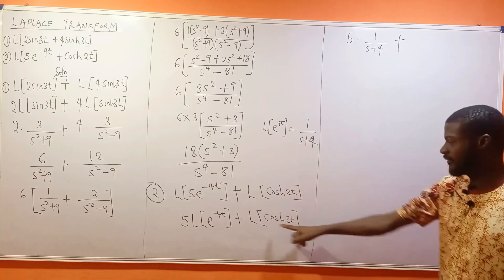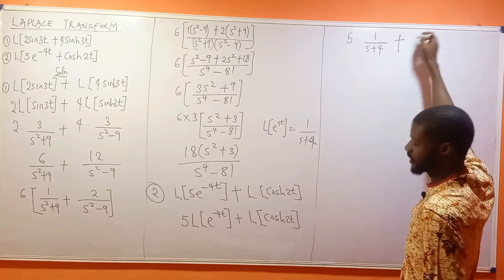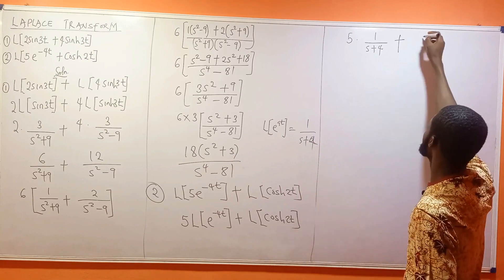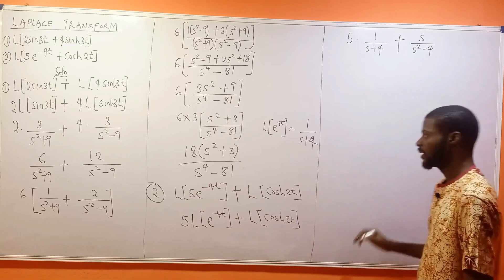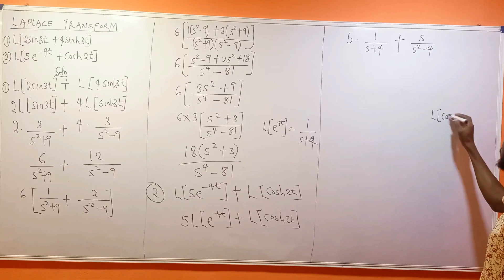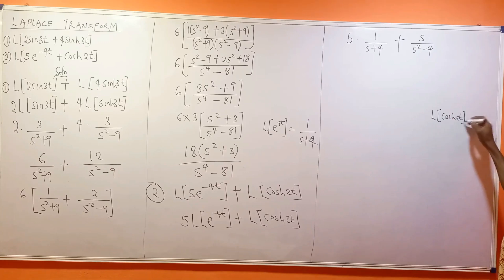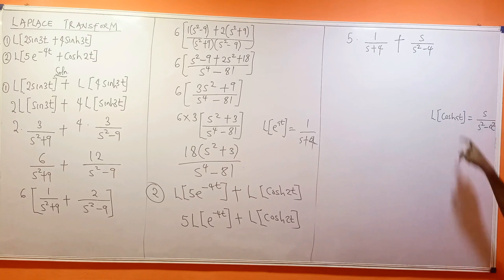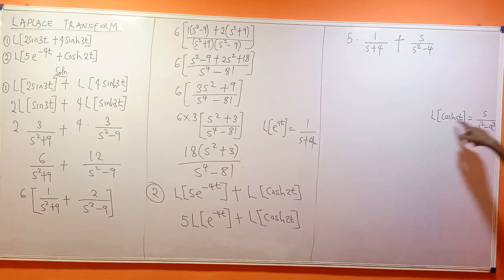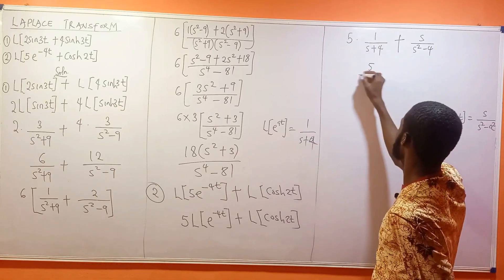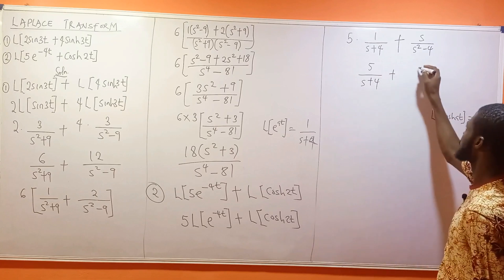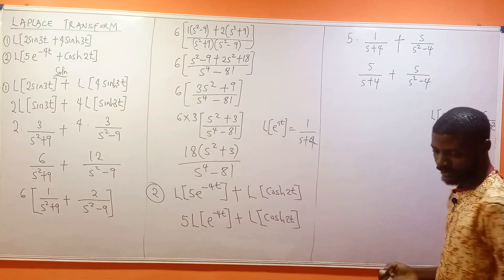The Laplace transform of cosh(2t) is s over s² minus 4. The standard result is: the Laplace transform of cosh(at) equals s over s² minus a². Note that cosh always goes with s at the numerator, while sinh goes with a at the numerator. So we have 5 times 1 over s plus 4, plus s over s² minus 4.